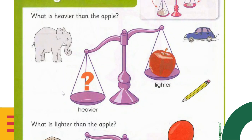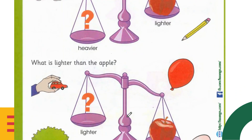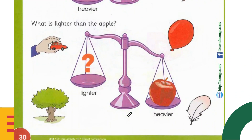What about the car? Yes, the car is also heavier than the apple. What about the pencil? No, because the pencil will be lighter than the apple. So the two things that are heavier than the apple are the elephant and the car.